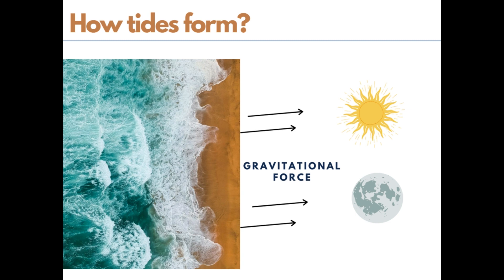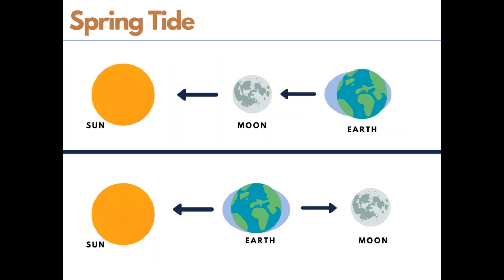What causes tides? A strong gravitational pull applied by the Sun and Moon on the surface of Earth creates fluctuations in water, resulting in tide formation. Water closer to the Moon gets pulled by the Moon's gravitational force, causing high tides. The Moon is closer to Earth than the Sun, so its gravitational pull is twice that of the Sun. On full and new moon days, the Sun, Moon, and Earth all lie on the same plane, and tides are highest on these days.